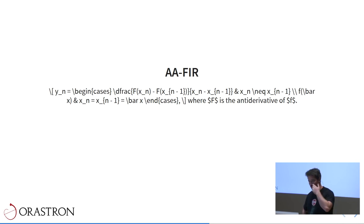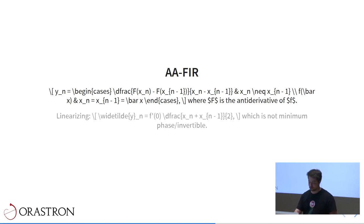The first approach to this problem in a way that's different from oversampling was proposed by Parker in 2016, and it involves the use of anti-derivatives of the original static non-linearity. If we linearize it, we will have a filter which is essentially the moving average of the present input value and the previous input value.